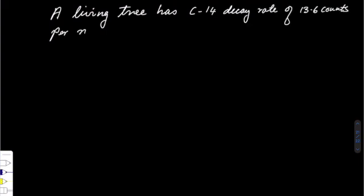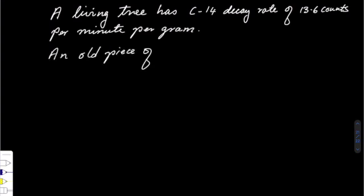A living tree has a carbon-14 decay rate of 13.6 counts per minute per gram, while an old piece of wood has a C-14 decay rate of 3.4 counts per minute per gram.